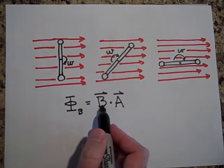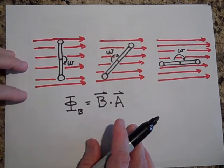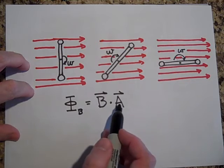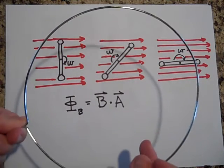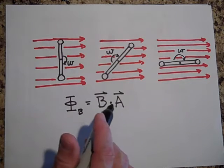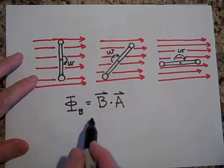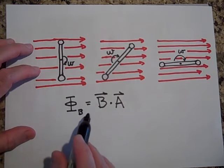Now, is the B changing? No, the B is always uniform in my setup. Is the A changing? No, the area of the hoop is not changing. What is changing is the orientation that the hoop makes with the field. And so that's how you're changing your flux.